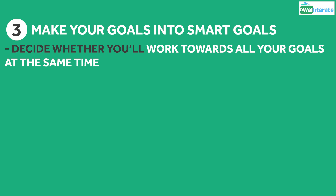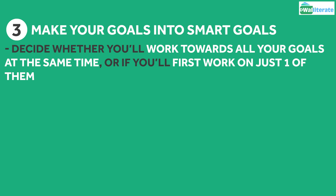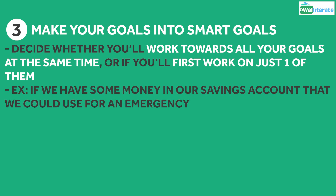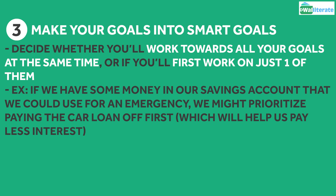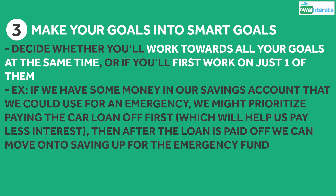You should also determine if you'll be working towards all of your goals simultaneously, or if you'll prioritize one over the other. For example, if we do have some money in our savings account that we could dip into in case of an emergency, we may want to prioritize paying the car loan off first, since paying it off faster will help us pay less interest. Once we've paid the loan off, we can then move on to saving up for the emergency fund.